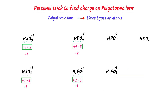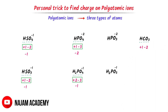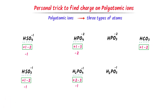Finally, carbonate ion has negative 2 charge and hydrogen has positive 1 charge. Positive 1 plus negative 2 equals negative 1. Hence, the charge on hydrogen carbonate is negative 1. Using these tricks, we can easily find the charge on polyatomic ions.